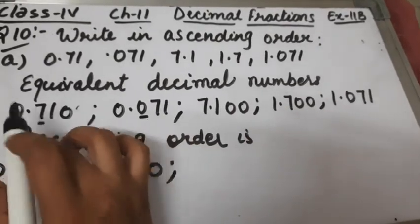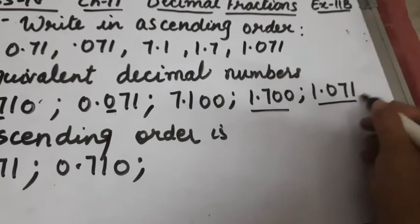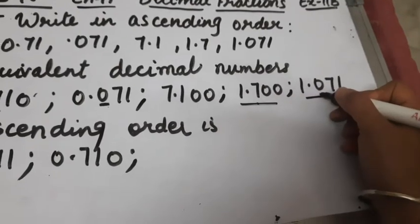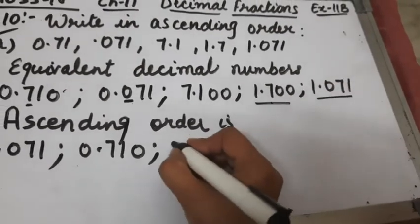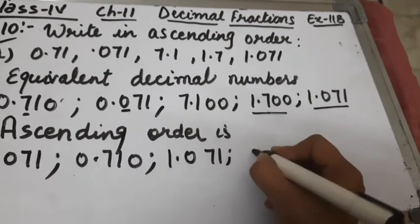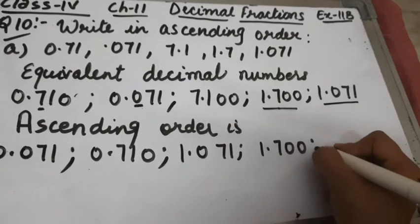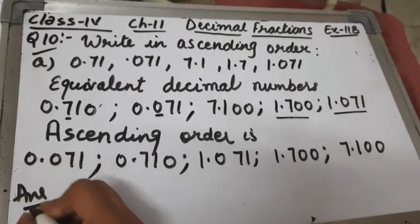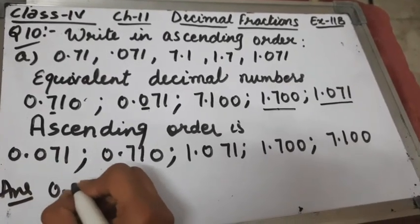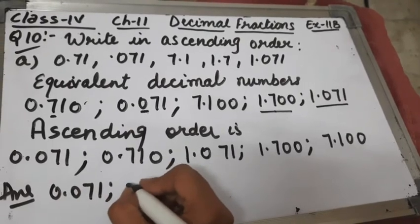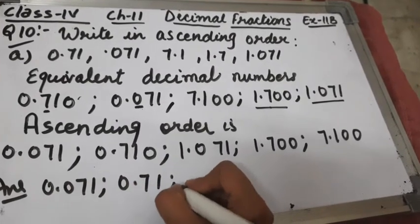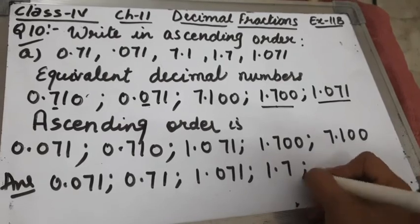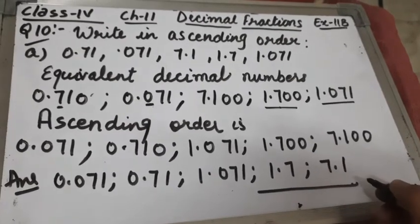Next we check numbers greater than 0 in the ones place, which is 1. Both 1.071 and 1.700 have 1 at the ones place, so we check the tenths place. In 1.071 the tenths place is 0, and in 1.700 the tenths place is 7, so 1.071 comes third, then 1.700, and finally 7.100. So the answer is: 0.071, 0.71, 1.071, 1.7, 7.1.